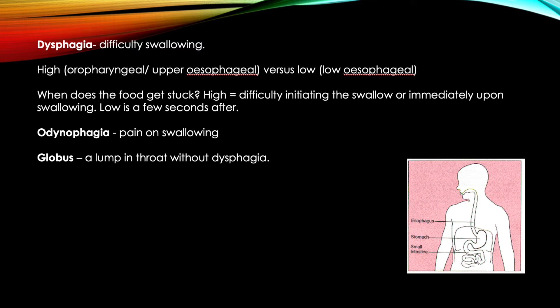Dysphagia is difficulty swallowing, odynophagia is pain on swallowing, and globus is a lump in the throat without dysphagia. We need to know from the get-go which of these three the patient is talking about. If we're talking about true dysphagia, it's really helpful to know whether it's high — the oropharyngeal region — or low esophagus. We can ask: is the food getting stuck when initiating the swallow or immediately after swallowing, both indicating high, or a few seconds afterwards, indicating low?